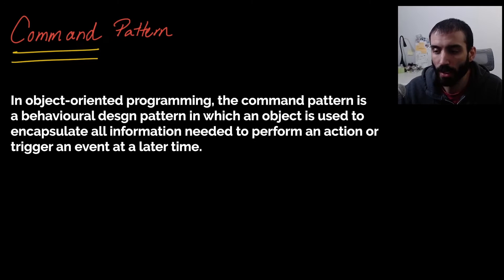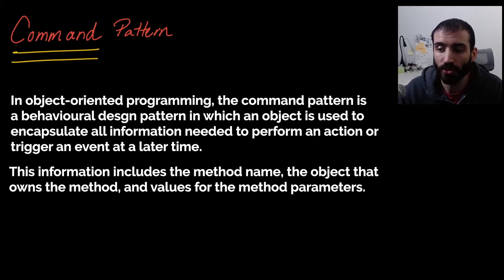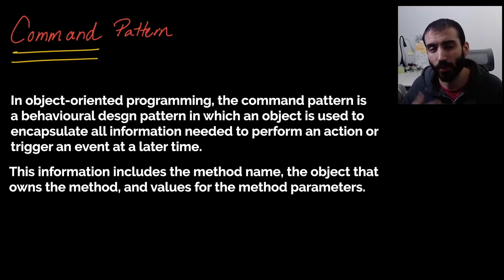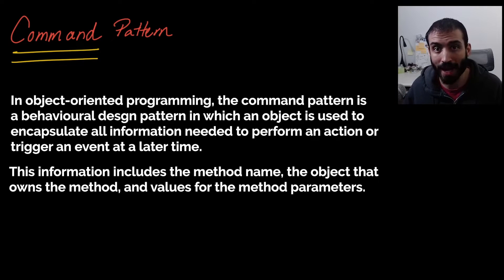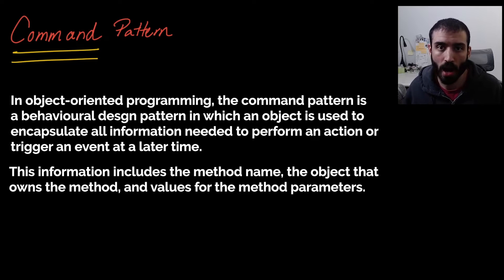In object-oriented programming, the command pattern is a behavioral design pattern in which an object is used to encapsulate all information needed to perform an action or trigger an event at a later time. This information includes the method name, the object that owns the method, and values for the method parameters. The way I like to think of it is that you wrap functionality or behavior in a class and a method, and then you can pop that into a slot — that slot is interchangeable with other methods as long as they adhere to the same pattern.